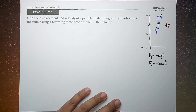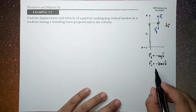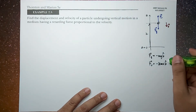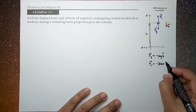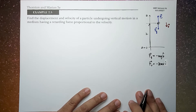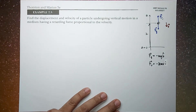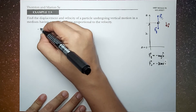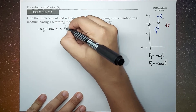You might ask why it is negative k-hat, but the force is upward. The negative sign here tells you the direction of your velocity. So the negative sign indicates that F_r is opposing the direction of your velocity — which is correct.